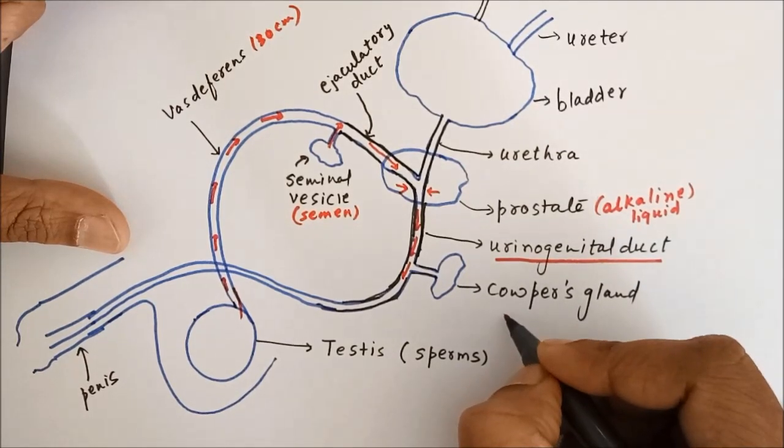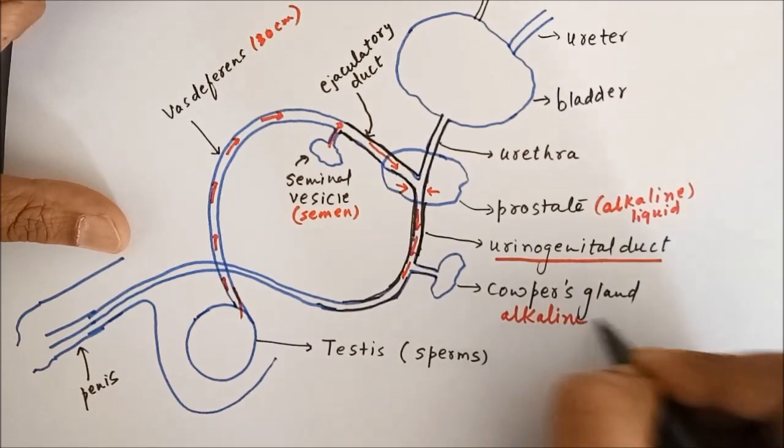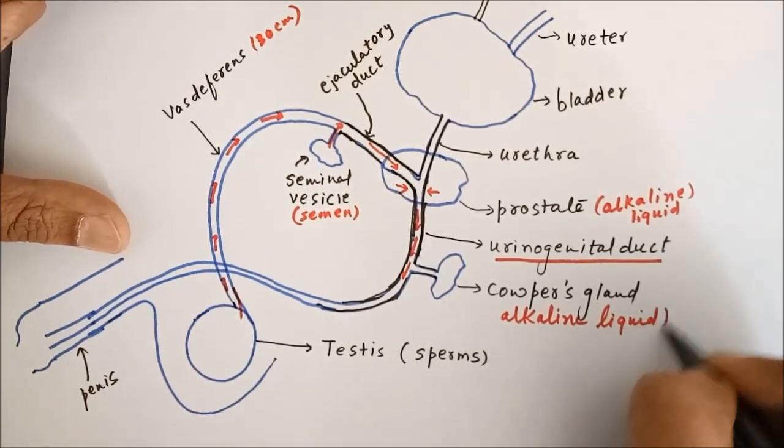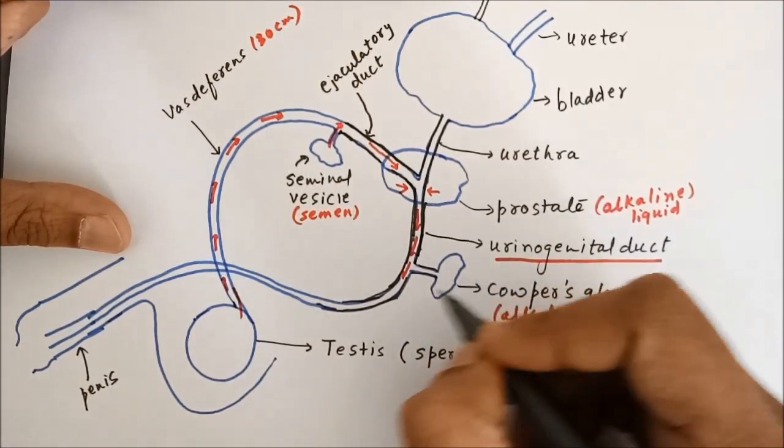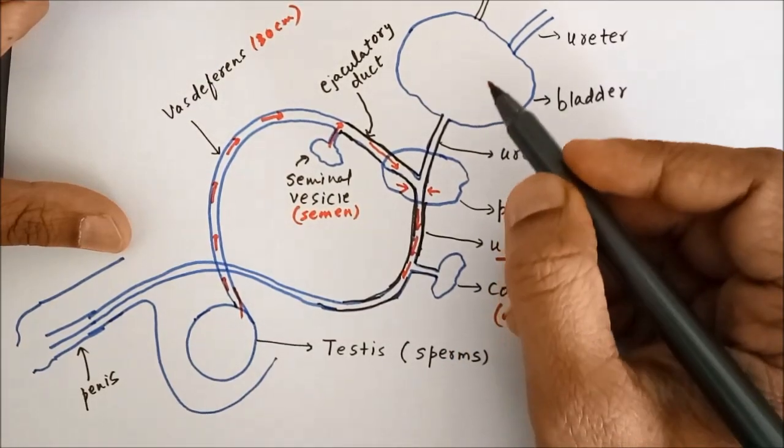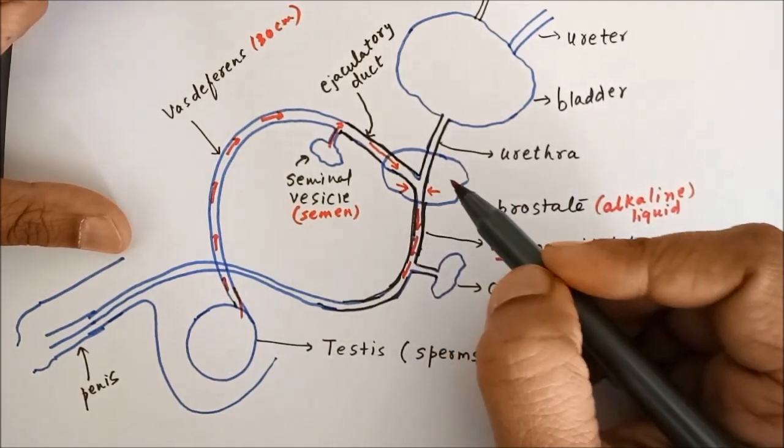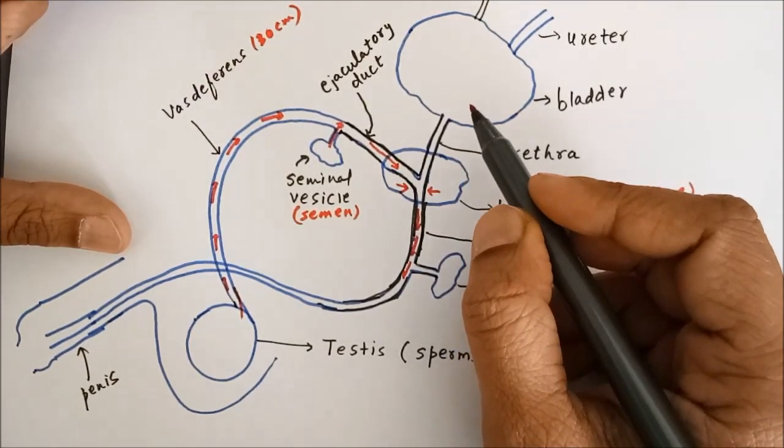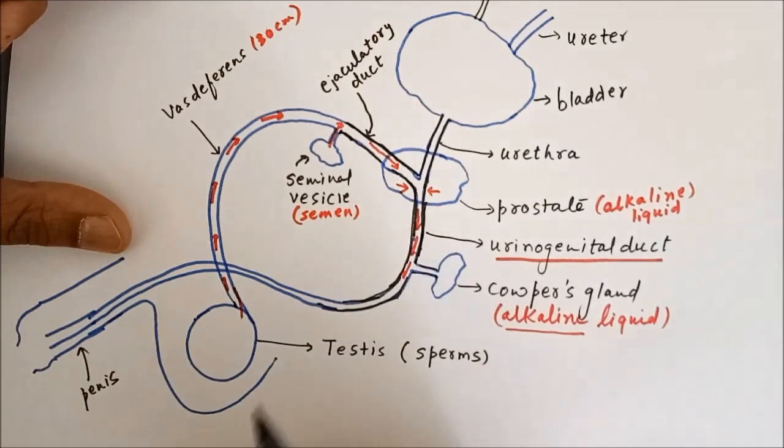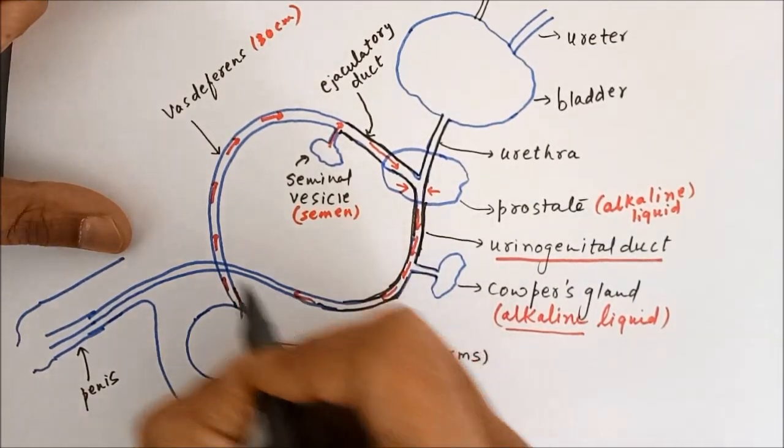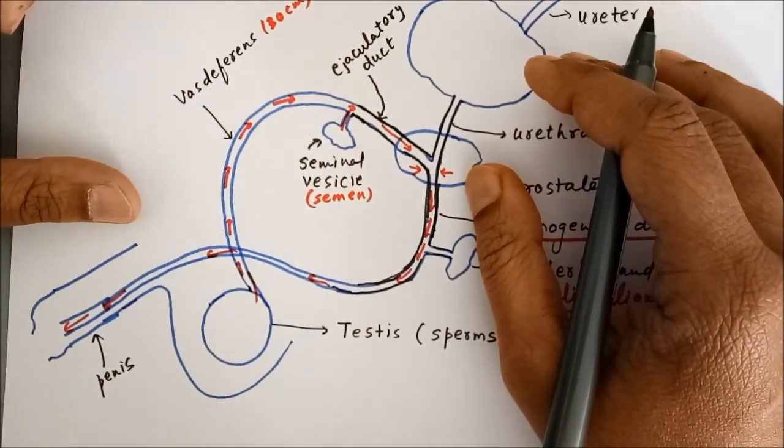When the sperms and semen travel ahead, there is Cooper's gland on the way. This Cooper's gland also produces an alkaline liquid that gets added up in the semen to counteract the effect of the urine, because our urine is also acidic. So the sperms die due to the acidic content of the urine. This alkaline liquid helps or protects them from the acidic nature of the urine. Then the semen and sperms go out of the muscular penis from the males.